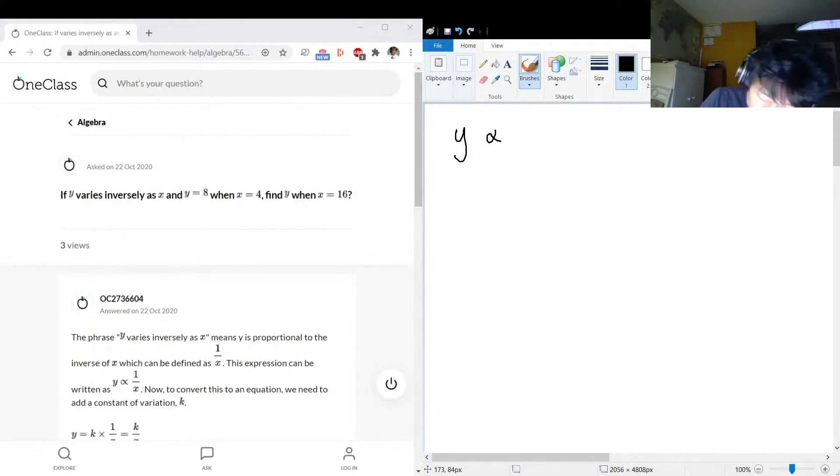This means that if y gets big, x is getting small, or if x is getting big, y is getting small. But what this really means is that y is equal to some constant times, let's call the constant k, times 1 over x.